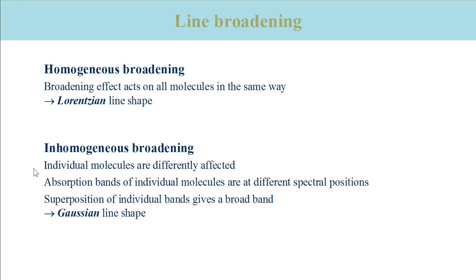The absorption and emission bands under such conditions are described by a Gaussian line shape function. This line shape function can be thought as a superposition of many individual Lorentzian lines from the individual molecules.